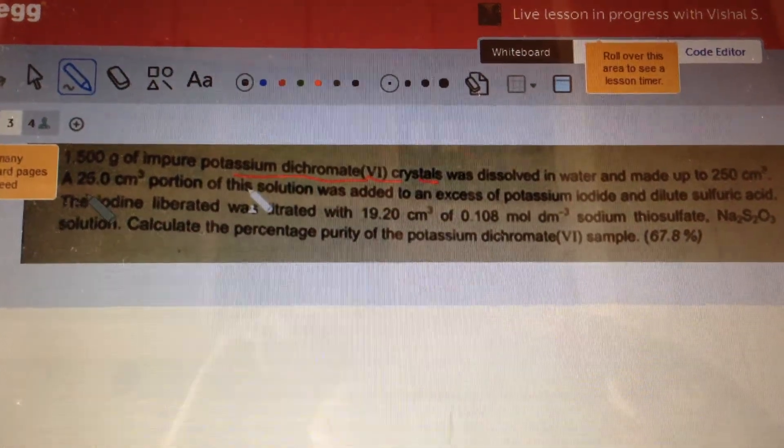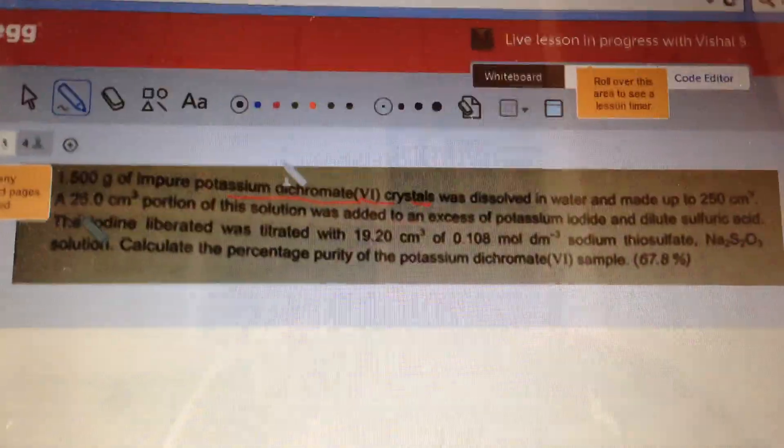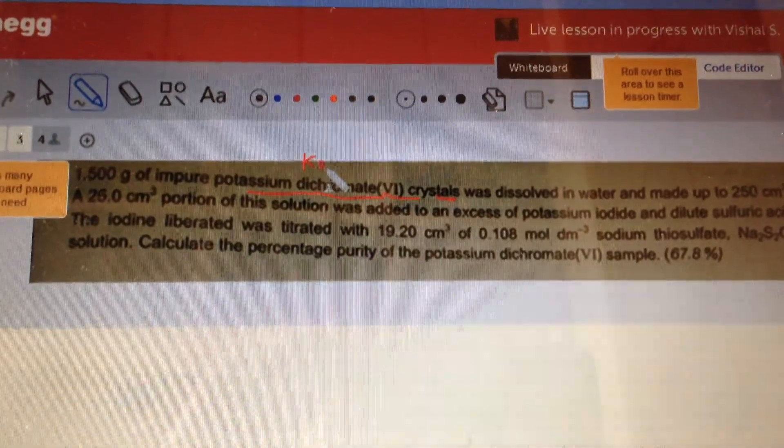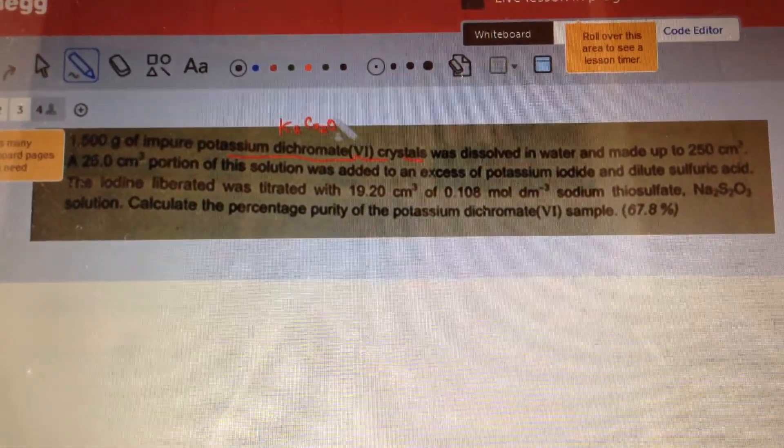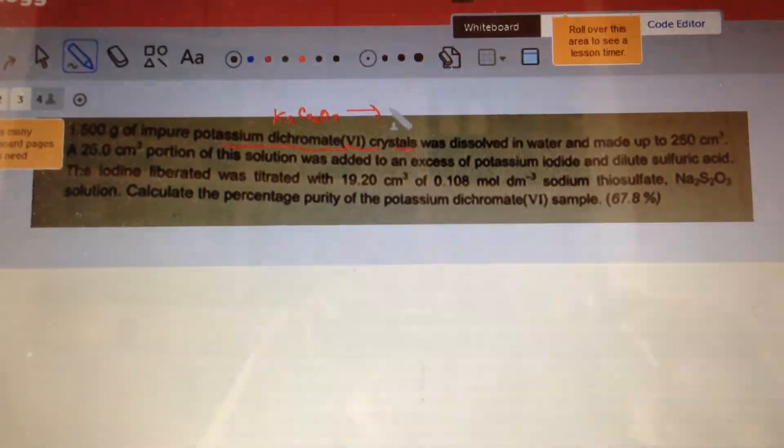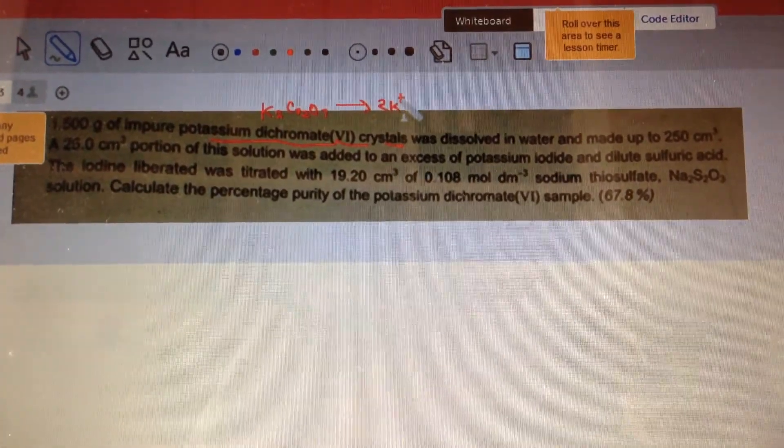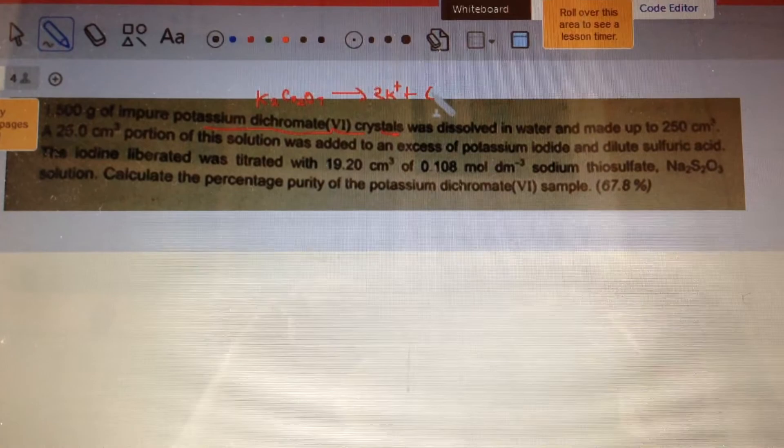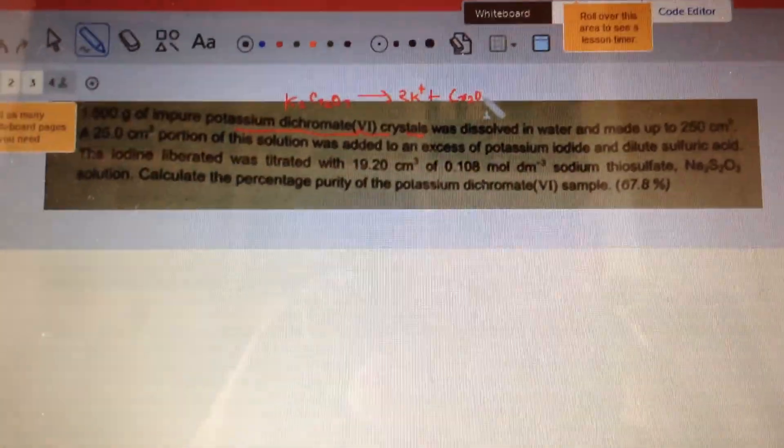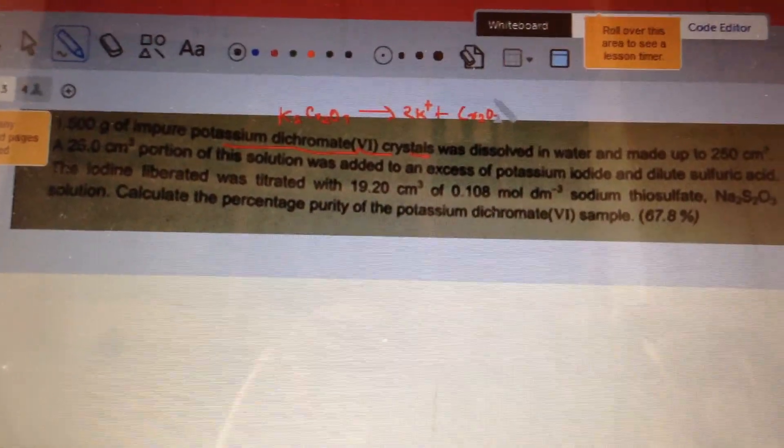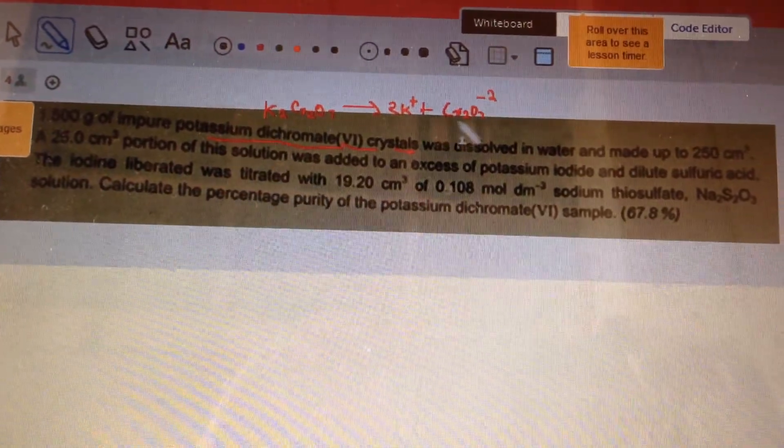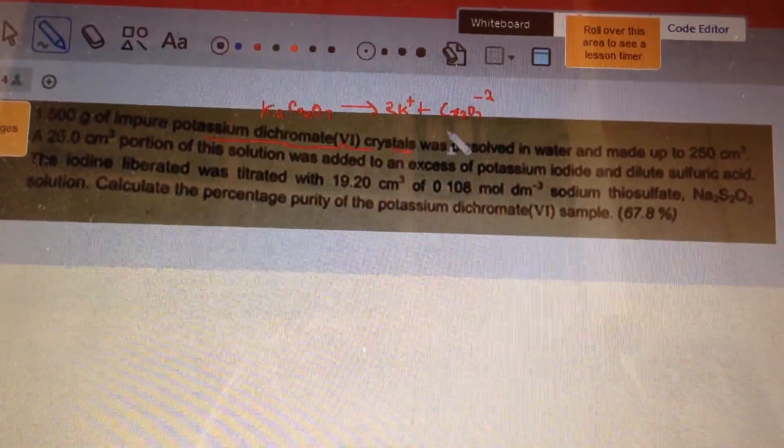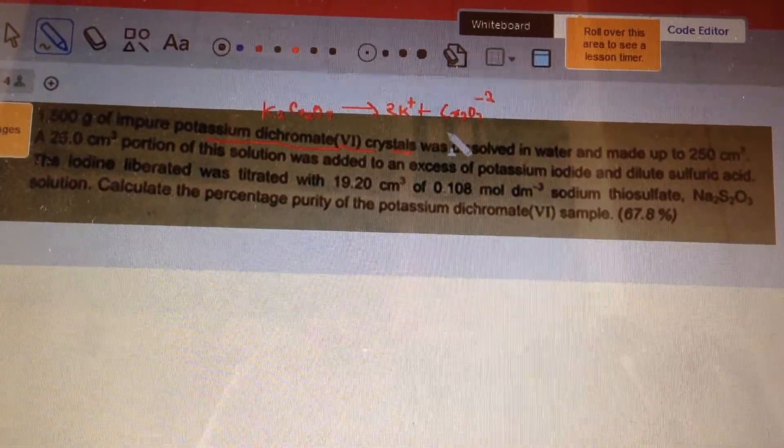For potassium dichromate, potassium dichromate is actually K2Cr2O7, which technically breaks into 2K+ and Cr2O7 2-. So this Cr2O7, the same we used in the last question,